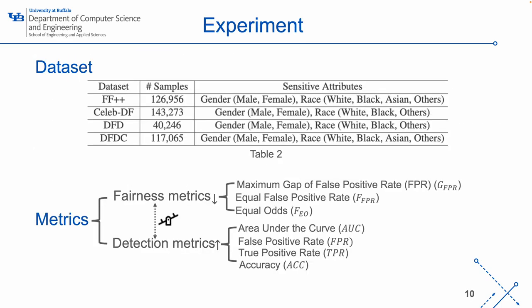In the experiment, we utilize four commonly used deepfake video datasets to evaluate our methods. The number of samples and attributes of each dataset are shown in Table 2. We employ two groups of metrics to evaluate performance. The first group is fairness metrics, containing the maximum gap of false positive rate (GFPR), equal false positive rate (FFPR), and equal odds (FEO). These metrics measure the gap across groups, where smaller values represent a fairer method. There is typically a trade-off between fairness and detection performance. Therefore, we also employ four commonly used deepfake detection metrics: area under the curve (AUC), false positive rate (FPR), true positive rate (TPR), and accuracy (ACC). Higher values denote better detection performance.